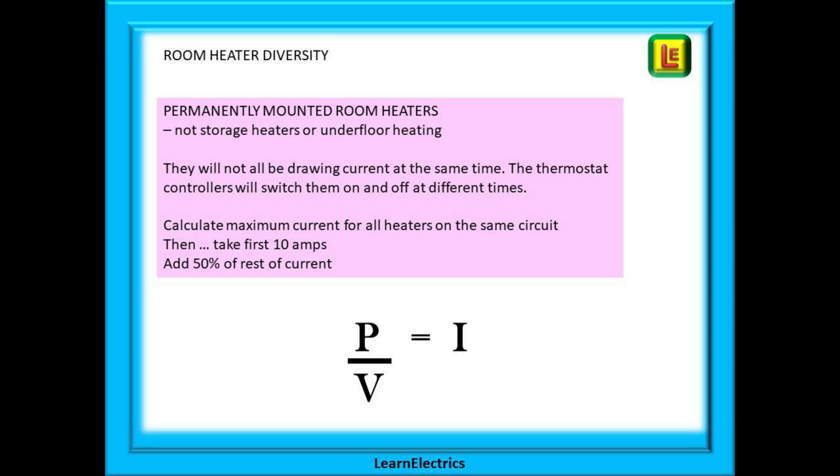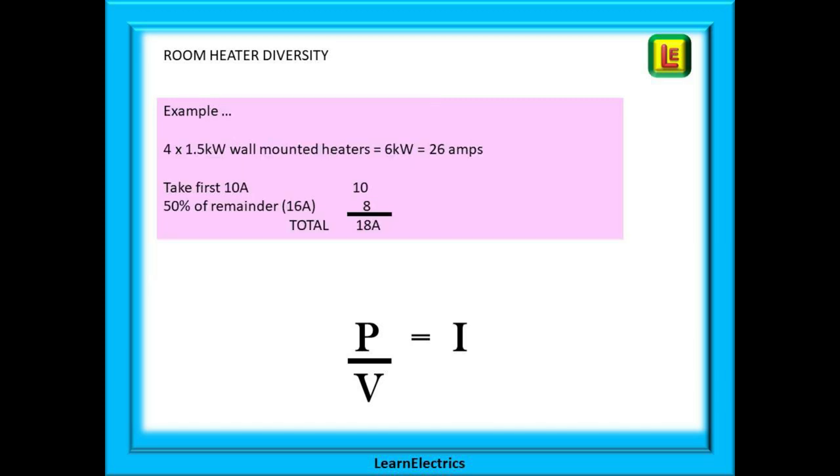Or maybe there are some permanently mounted room heaters hardwired into their own circuits, not plugged into the sockets. Ordinarily, they will not all be drawing current at the same time. The thermostat controllers will switch them on and off at different times. First, we calculate maximum current for all heaters on the same circuit and add them together, then take the first 10 amps and add 50% of the rest of the current. So if we have four 1.5 kilowatt wall mounted heaters, this is a total of 6 kilowatts, and performing the power law calculation for current, we find that the full load current is 26 amps. Take the first 10 amps, then calculate 50% of the remaining 16 amps, which is 8 amps. 10 amps plus 8 amps, there's our answer. After diversity, we allow 18 amps for this circuit.